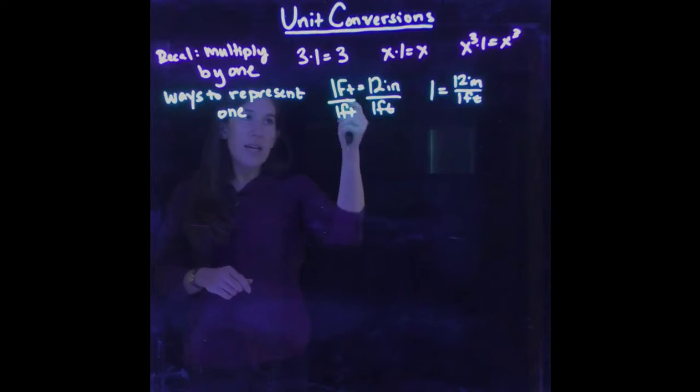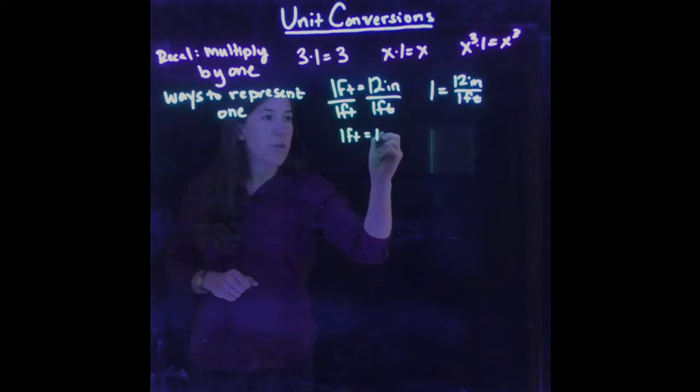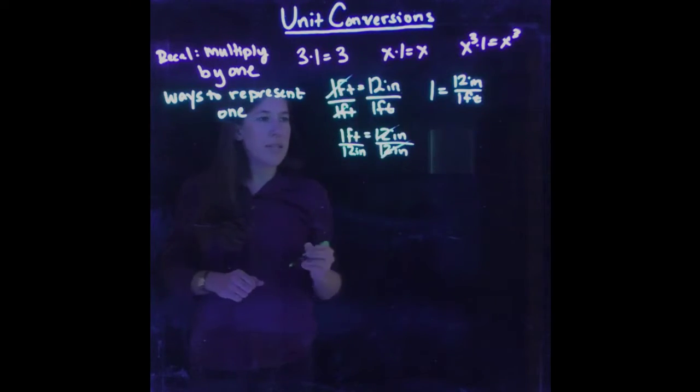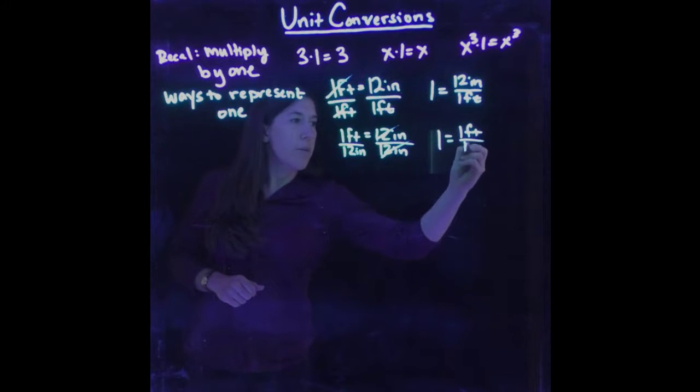Interestingly, I decided here to divide by 1 foot, but I could have divided both sides by 12 inches. So let's start with 1 foot equals 12 inches. Now we divide by 12 inches on both sides. And again, these are canceling here, so we just get this equals 1. So we have 1 equals 1 foot divided by 12 inches.